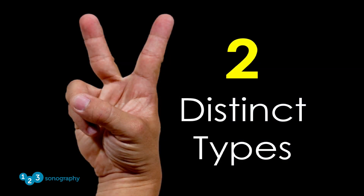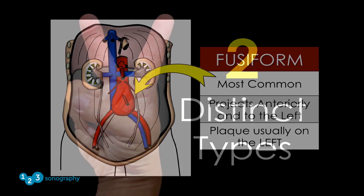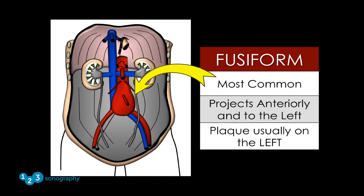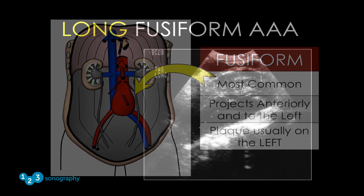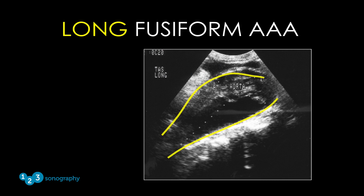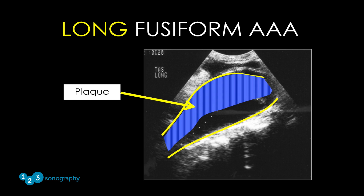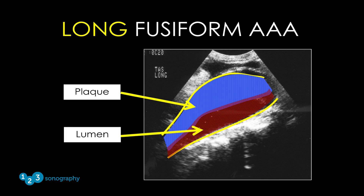There are two types of abdominal aortic aneurysms. The most common by far is the fusiform type, which usually tapers at both the proximal and distal extent. The aneurysmal sac usually projects anteriorly and to the left, and there is usually intraluminal plaque on the left anterior wall. This image displays a longitudinal view of a fusiform abdominal aortic aneurysm, with a large intraluminal plaque on the anterior wall.